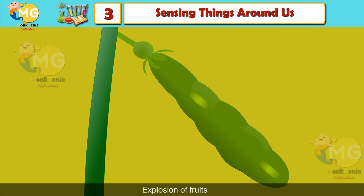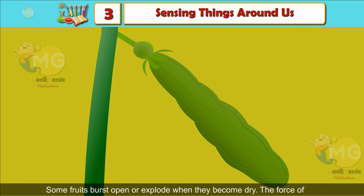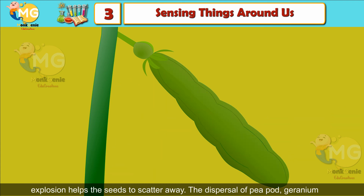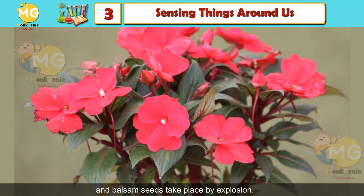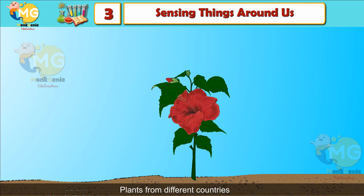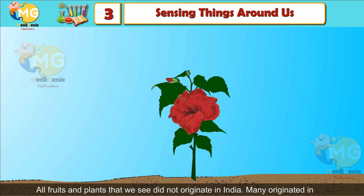Explosion of fruits: some fruits burst open or explode when they become dry. The force of explosion helps the seeds to scatter away. The dispersal of peapod, geranium, and balsam seeds takes place by explosion.